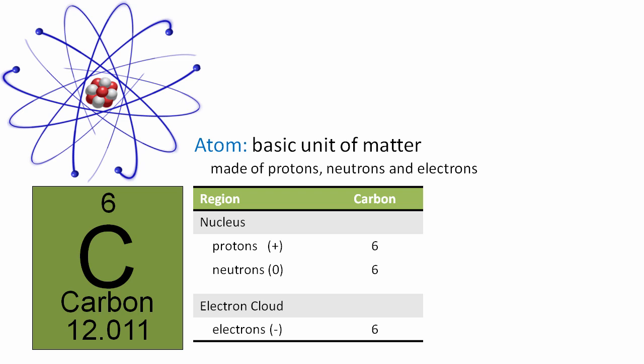But carbon is not the only important element in biology. Another one might be oxygen. Different from carbon by the number of protons, neutrons, and electrons it contains, oxygen has eight protons balanced out by eight electrons and eight neutrons. But this isn't always a pattern for all elements.